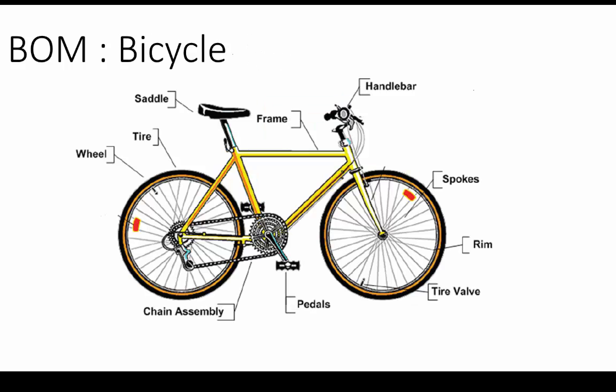Let us try to understand BOM with an example of a bicycle. This picture of a bicycle gives us an overview of the different parts or components a bicycle is made up from. In order to assemble the bicycle, we need wheels, handlebar, pedals, and frame. Again, in order to manufacture wheels, we need tire, tire valve, and spoke. We need all these components in specific quantities to assemble the bicycle.